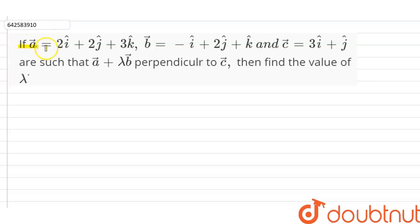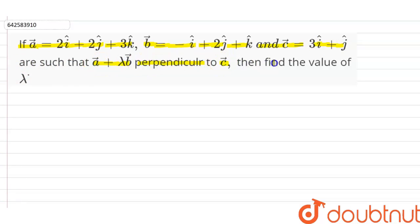If vector a equals 2i plus 2j plus 3k, and vector b equals minus i plus 2j plus k, and vector c equals 3i plus j, are such that the vector a plus lambda vector b is perpendicular to vector c, then find the value of lambda.